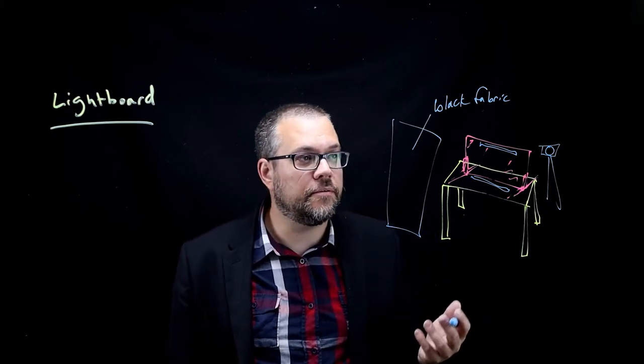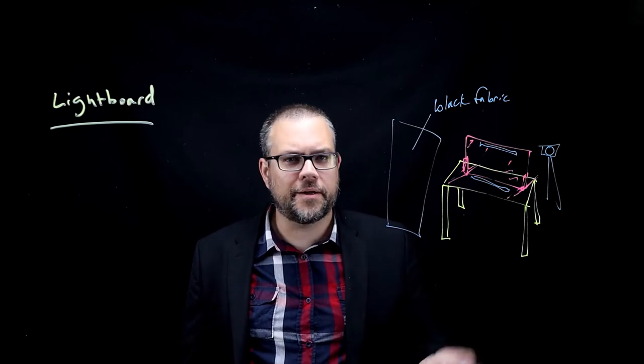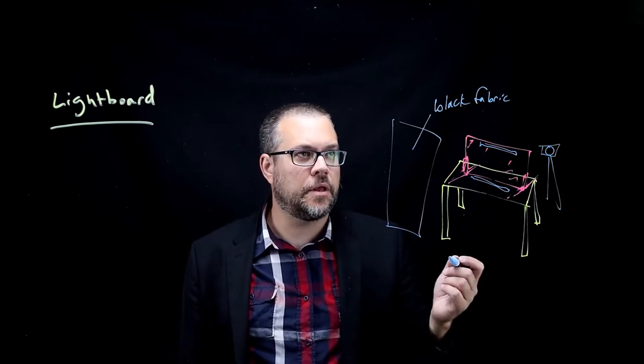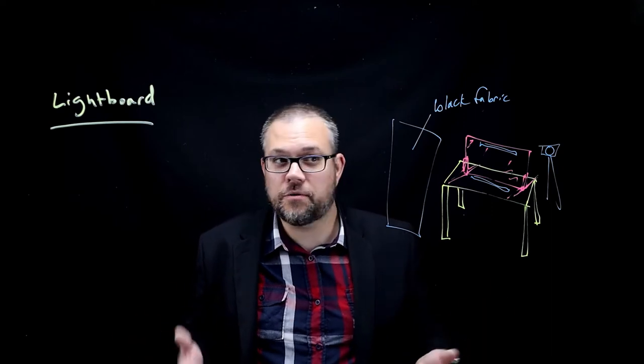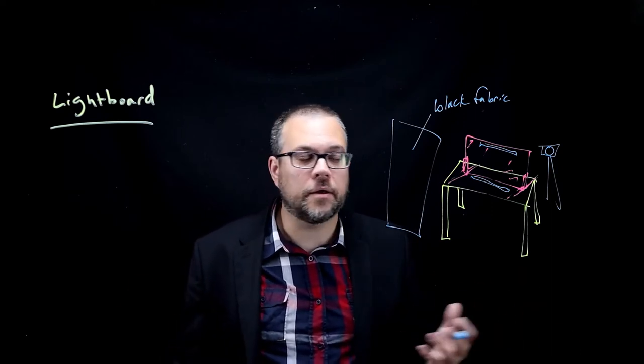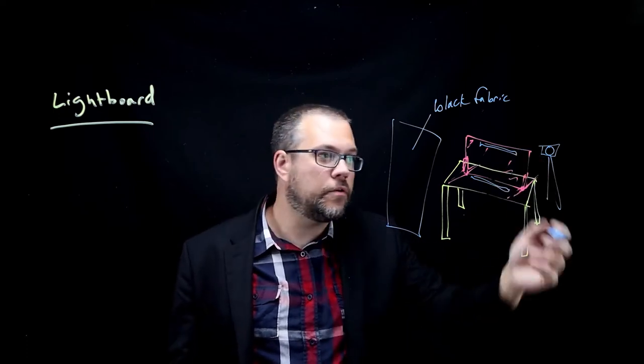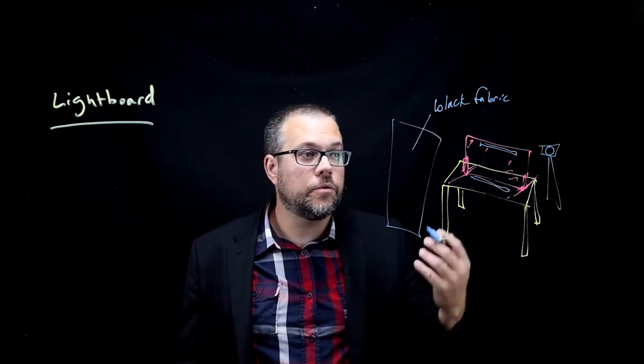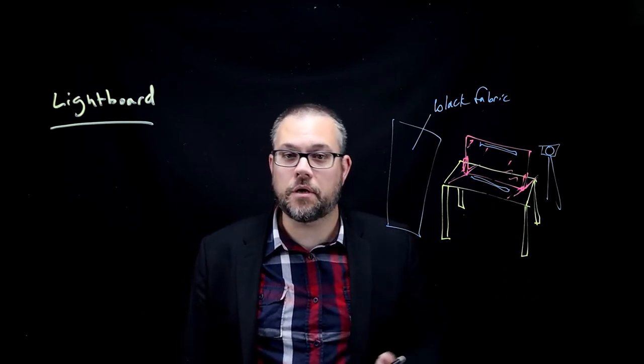The plexiglass itself was pretty expensive - it was over two hundred dollars for the two by four piece. The shelf brackets weren't too much, they were twenty bucks or something. The fabric itself - my wife is a sewer and so she had some stuff laying around and we went out to the fabric store and got something a little bigger. That wasn't very much. The webcam I already owned, the tripod I already owned, so there's really like three hundred dollars or so worth of material in this particular version setup.